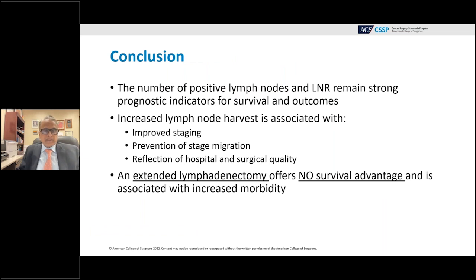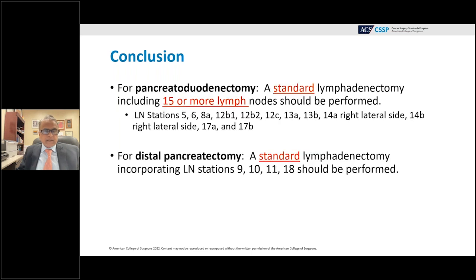In conclusion, the number of positive lymph nodes and lymph node ratio remain strong prognostic indicators. Increased lymph node harvest is associated with improved staging, and prevention of stage migration reflects hospital and surgical quality. Extended lymphadenectomy offers no survival advantage and is associated with increased morbidity. For a Whipple, a standard lymphadenectomy should include 15 or more lymph nodes at stations 5, 6, 8a, 12b1, 12b2, 12c, 13a, 13b, 17a, and 17b; for distal resections, stations 9, 10, 11, and 18.